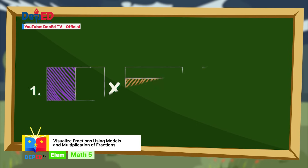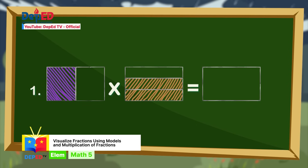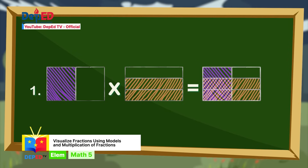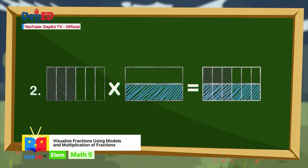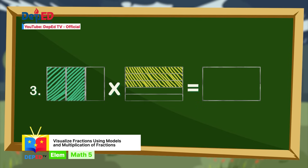Number one — here's the answer. Number two — the answer is shown. Number three — here's the answer.